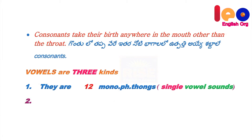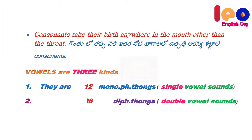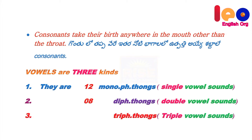Second, Diphthongs — double vowel sounds. They are 8 in number. Third, Triphthongs — triple vowel sounds. They are 3 in number.